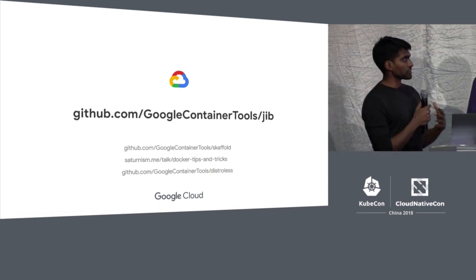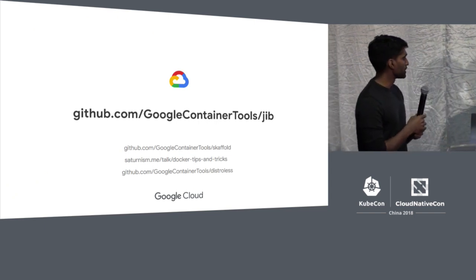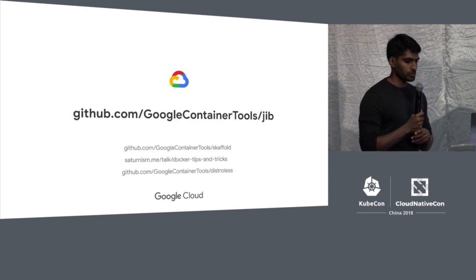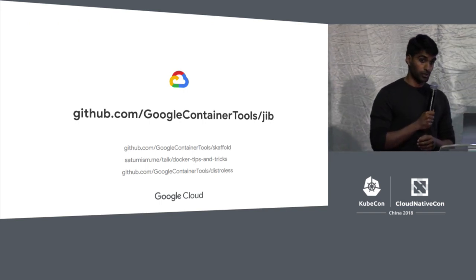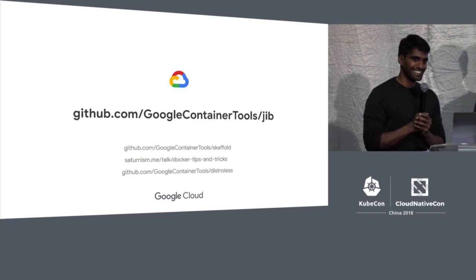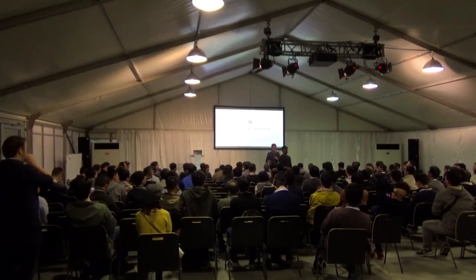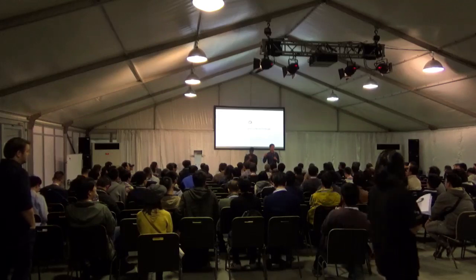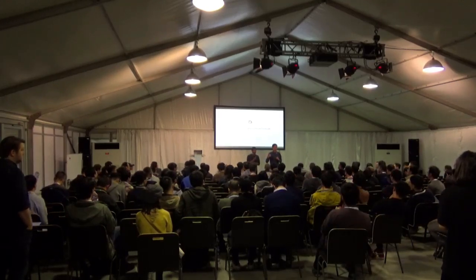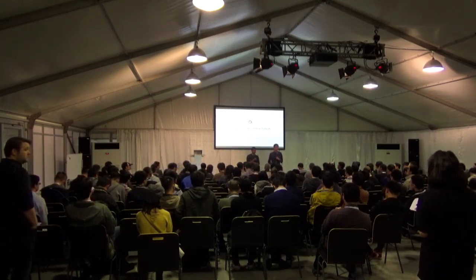That's our talk. This is the GitHub page for Jib — you can go there for documentation or to file an issue. There are also links for Skaffold, Distroless, and some Docker build tips and tricks. We have a couple of minutes for questions or restaurant recommendations in Shanghai. Jib doesn't support Bazel since it's just Maven or Gradle plugins, but there is a Bazel rules_docker on the Google Cloud Platform GitHub. Skaffold also supports Bazel out of the box.